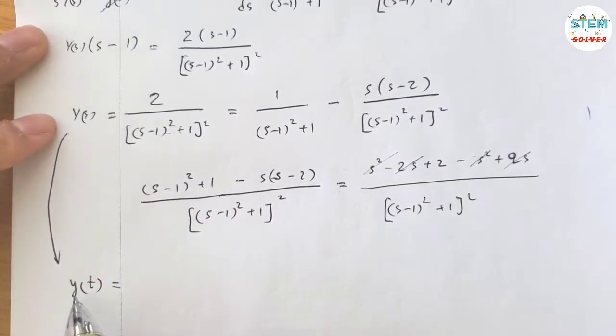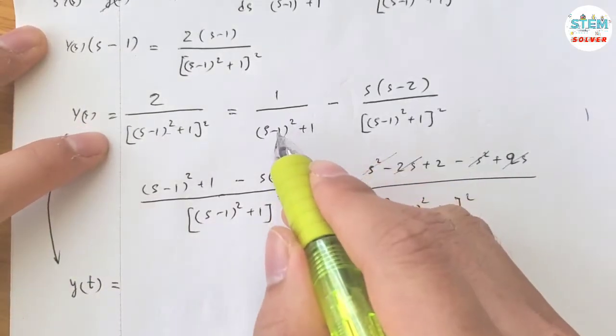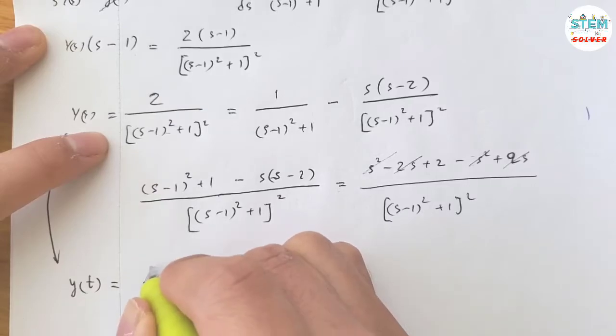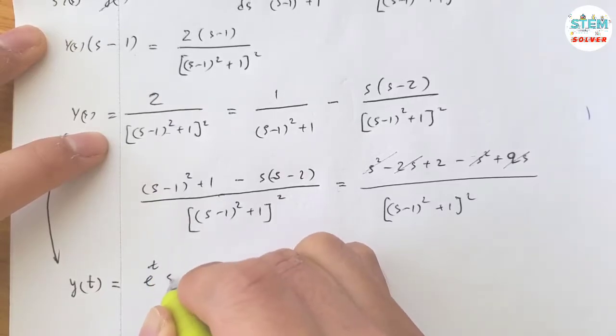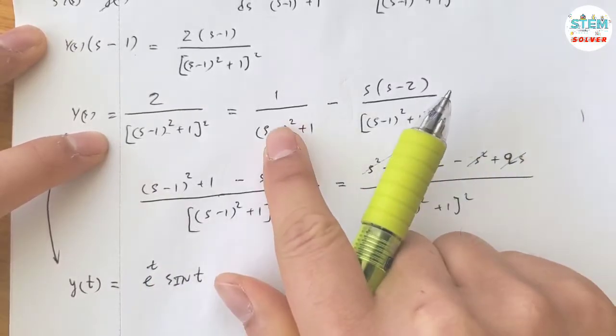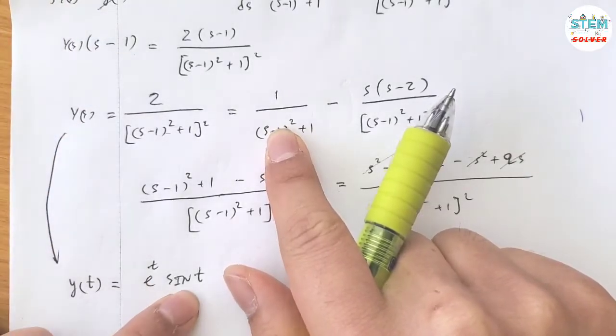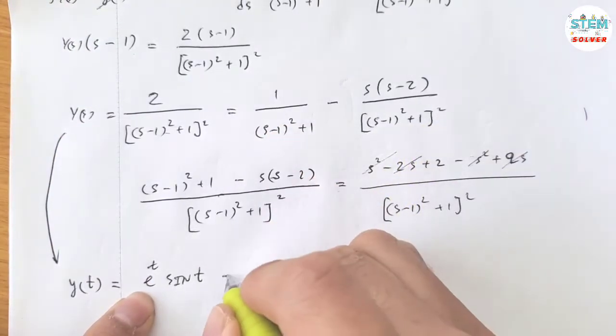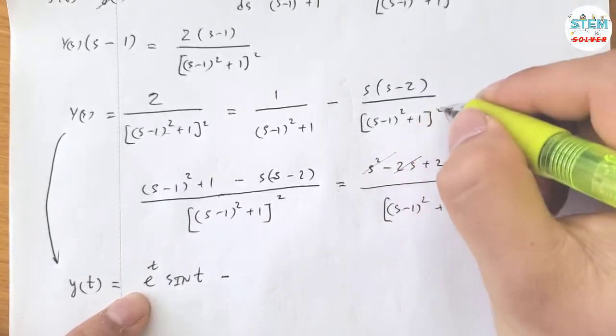Take the inverse of both sides. I have y of t equals, inverse of this is e to the t sine t. So ignore this, you have 1 over s square plus 1, that is sine t, and the shift is negative 1, so you have e to the t. Minus, but this one, it's a little bit tricky.